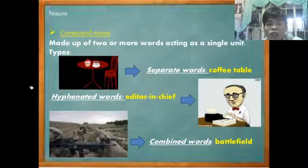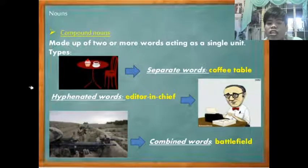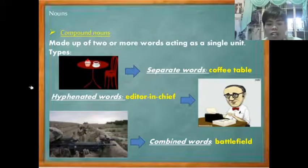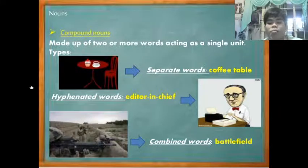Next are compound nouns. These are nouns made up of two words joined together to create a single unit. Examples include: coffee table, editor-in-chief, and battlefield.